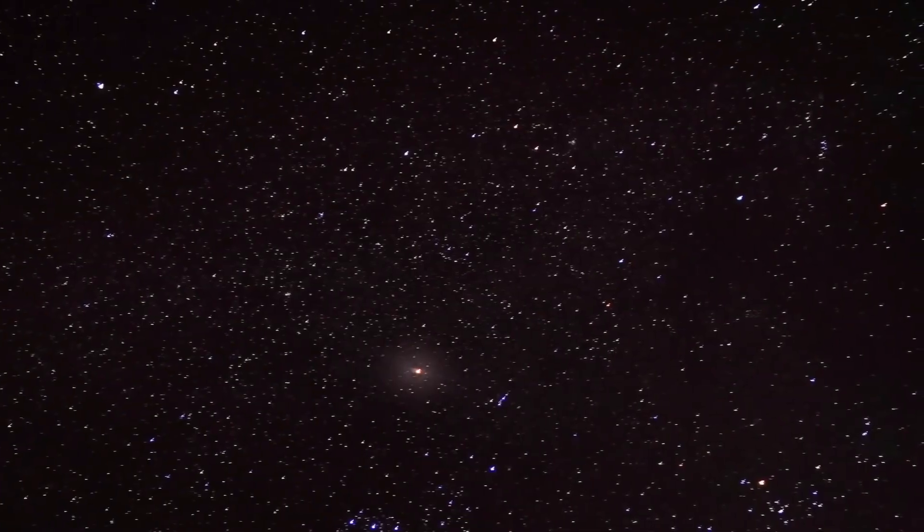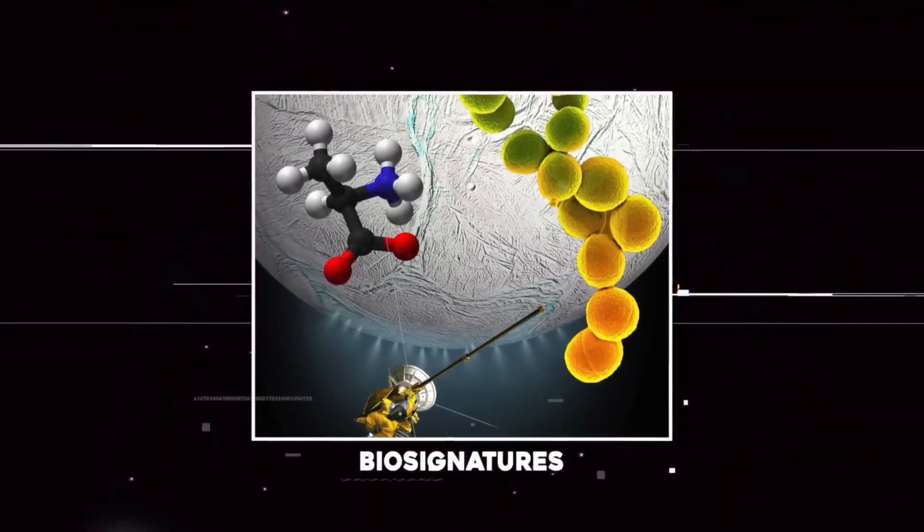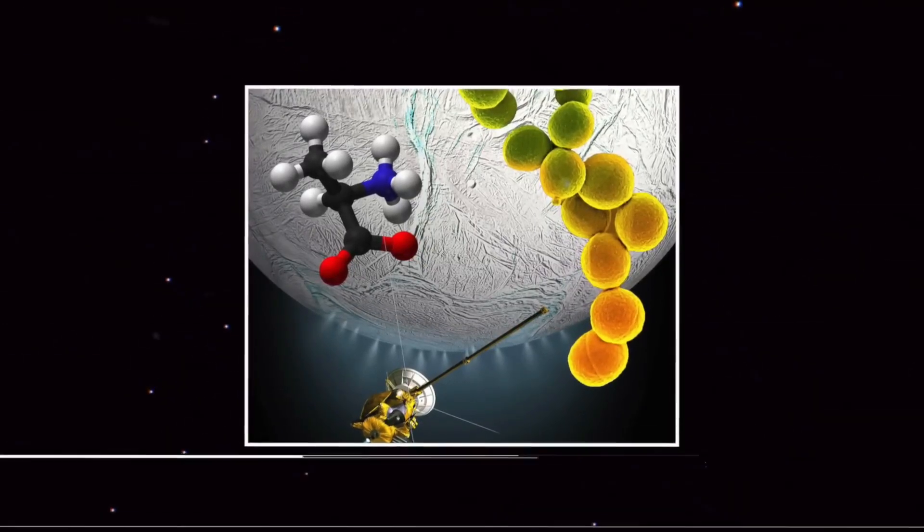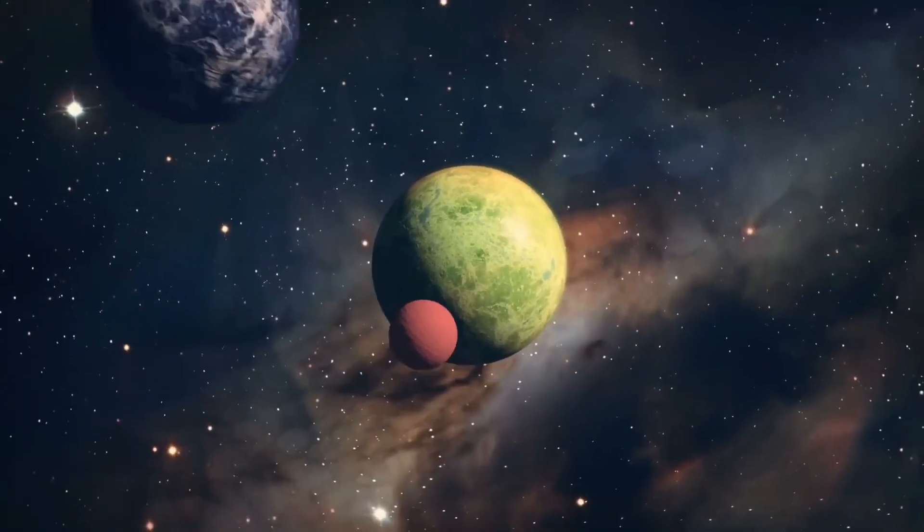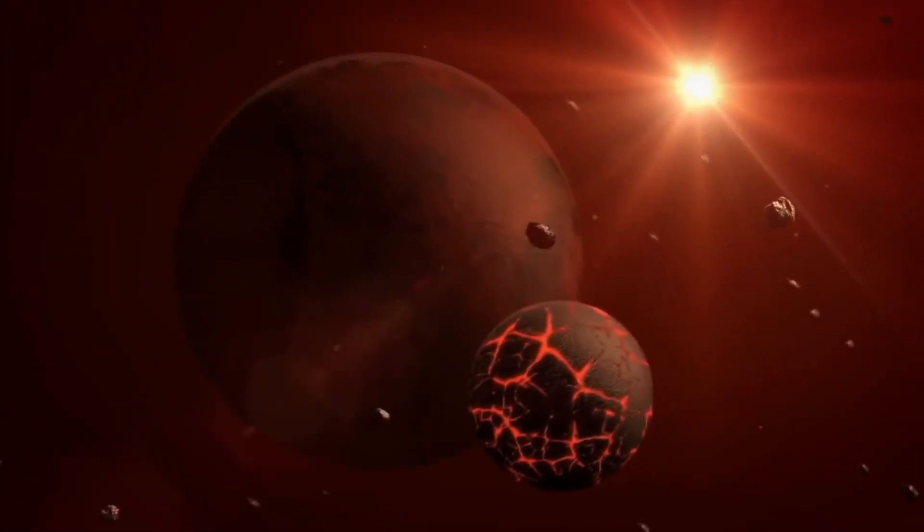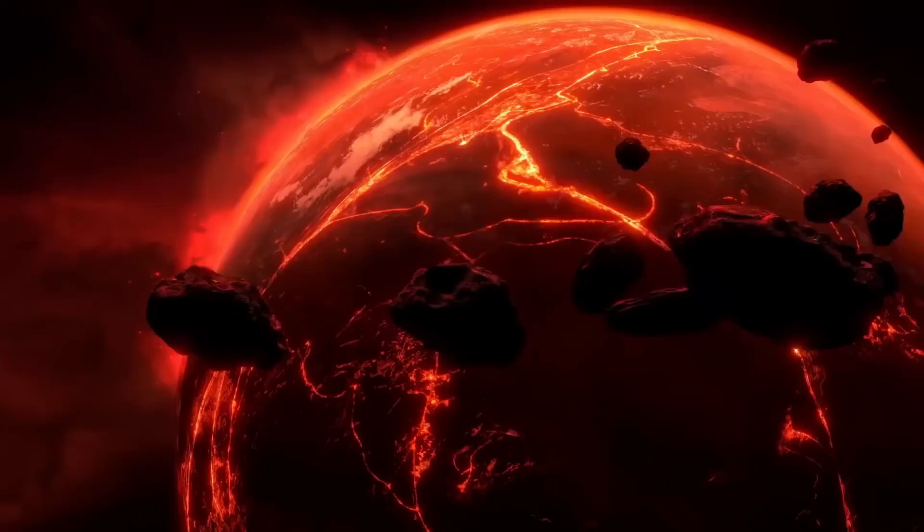This research was done as part of the Webb Guaranteed Time Observation or GTO program 1177. This is one of eight programs from Webb's first year of science that are meant to help fully characterize the TRAPPIST-1 system. We also didn't see any signs that carbon dioxide was taking in light, which would have been clear from these measurements.